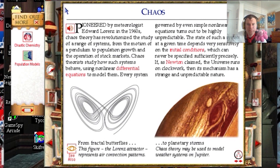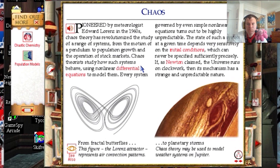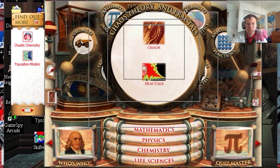Pioneered by meteorologist Edward Lorenz in the 1960s, Chaos Theory has revolutionized the study of a range of systems, from the motion of a pendulum to population growth and the operation of stock markets.